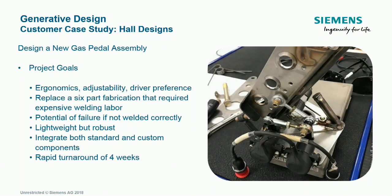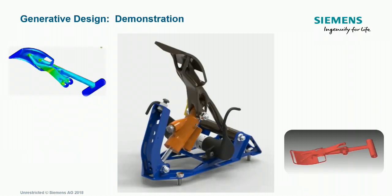Today we're going to look at a specific customer case study from Hall Designs. Their task was to design and manufacture a new gas pedal assembly for the Herb Smith Racing Team. This racing team has developed a unique traction control system for their race cars that gives them a competitive advantage. The gas pedal mechanism is a critical part of the traction control system and it connects the driver with the drivetrain. One of the specific design goals was to replace the current gas pedal — a six-component welded assembly — with a single body component. The welded assembly required specialist welding labor, and if not welded correctly, could be subject to failure. The new gas pedal needed to be lightweight but robust, and had to be designed, manufactured, and delivered in the space of four weeks.